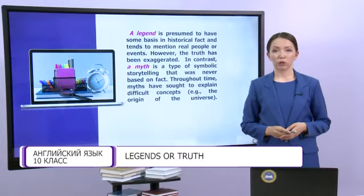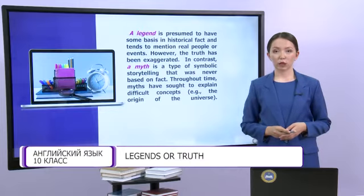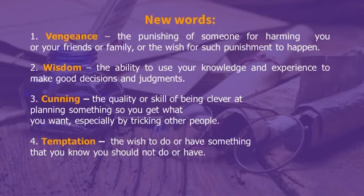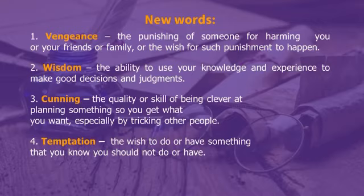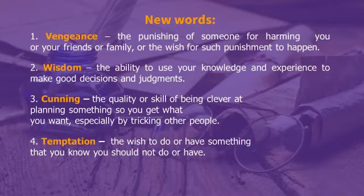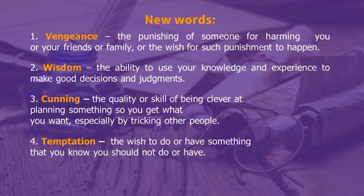Now we are going to read a short myth called Pandora's Box. Before reading, let's look at some new words. Word number one: vengeance — the punishing of someone for harming you or your friends or family, or the wish for such punishment to happen. Word number two: wisdom — the ability to use your knowledge and experience to make good decisions and judgments. Word number three: cunning — the quality of being clever at planning something to get what you want, especially by tricking other people. Temptation means the wish to do or have something that you know you shouldn't.